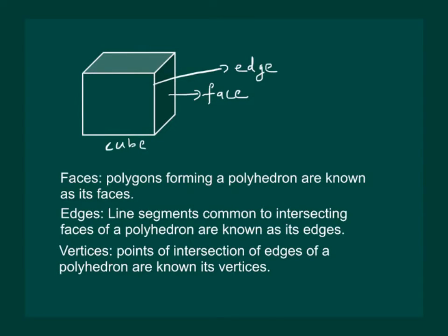And lastly we define vertices. Points of intersection of edges of a polyhedron are known as its vertices. That means edges are intersecting at this point. Similarly, some of the edges are intersecting at this point and so on. So each of them is a vertex and together they are known as vertices. Also remember that in a polyhedron, three or more edges meet at a point to form a vertex because we have defined polyhedron as a solid shape.